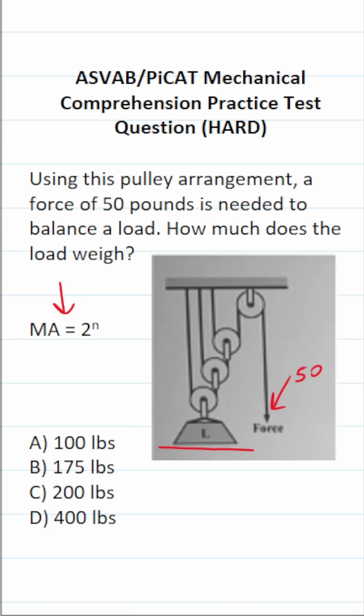If we look at our compound system, you can see that we have one fixed pulley and three movable pulleys. So in this case, n is going to be 3.